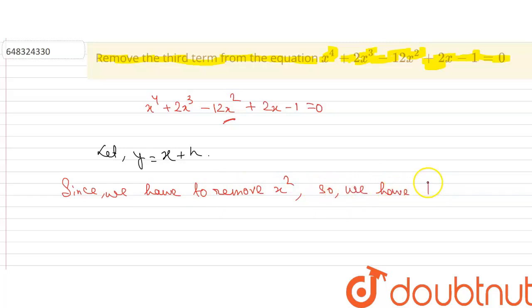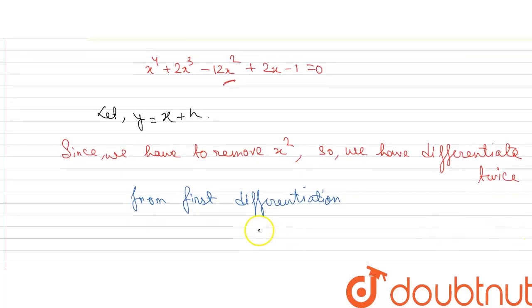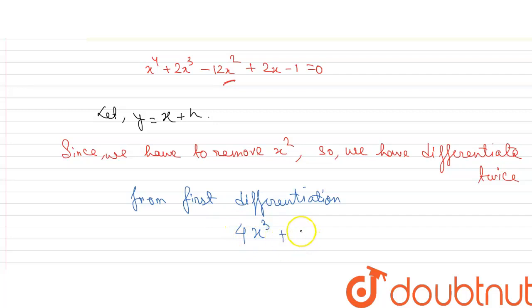First we have to differentiate this. From first differentiation we get 4x³ + 6x² - 24x + 2 = 0.